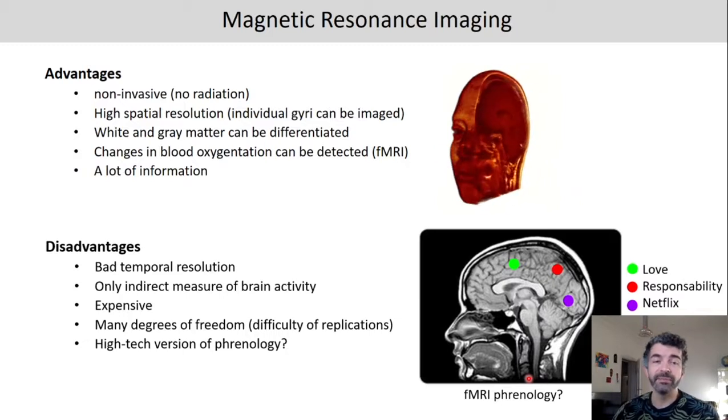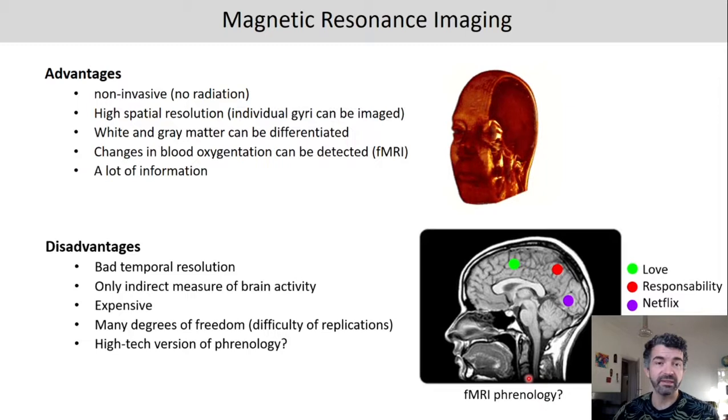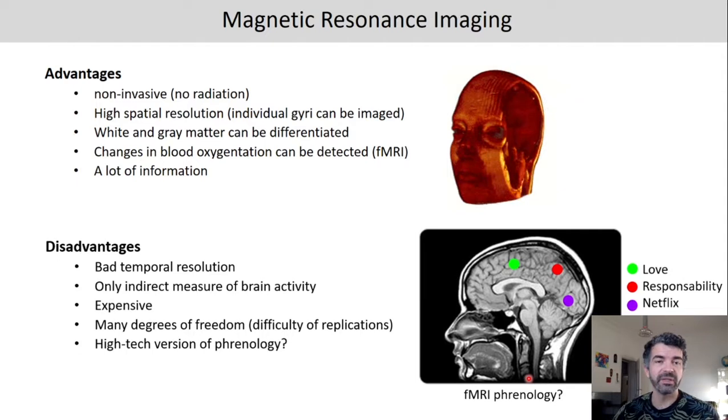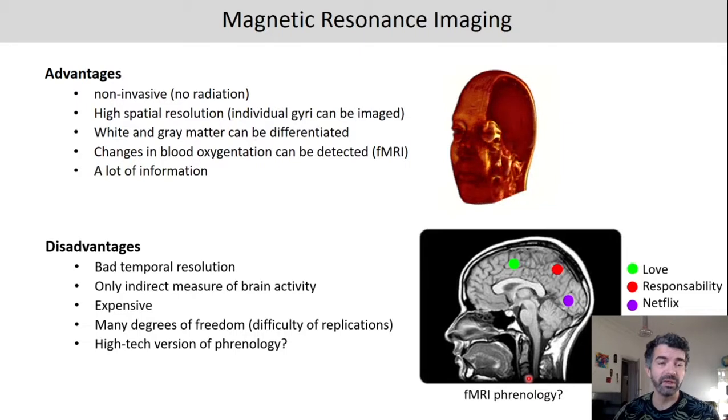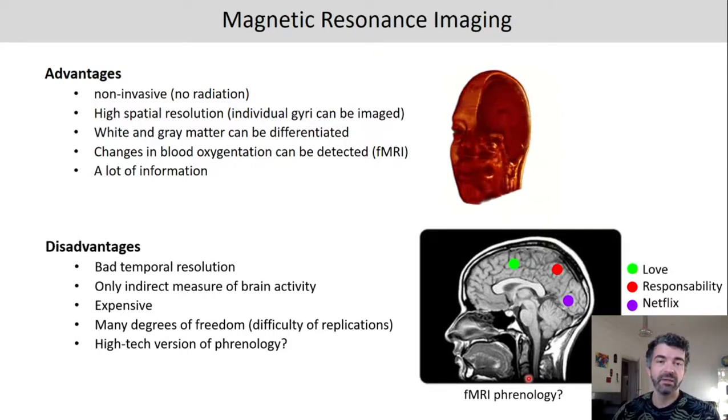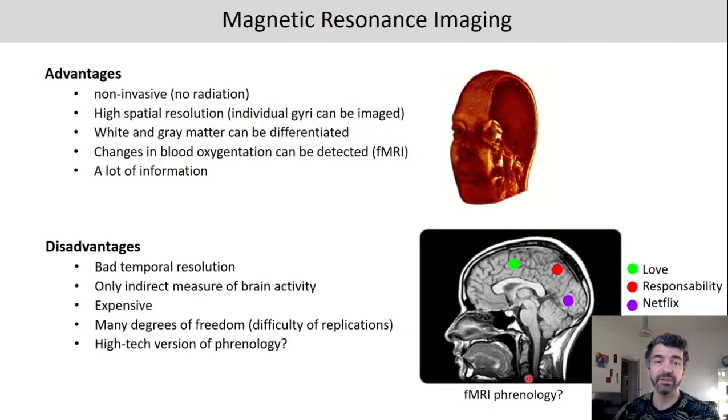MRI is also very expensive compared to EEG for example. And in MRI we have many degrees of freedom. What I mean by that is that there's a complex way to analyze the MRI data and not all of these processing steps are 100% standardized between labs or research groups. So there can be a difficulty of getting replications of certain studies. And it was also said that some people argue that fMRI can easily run into the problem of being some kind of high-tech version of phrenology. Meaning that researchers might sometimes be tempted to associate a specific brain region to a specific cognitive process even though that might not be justified by the data.